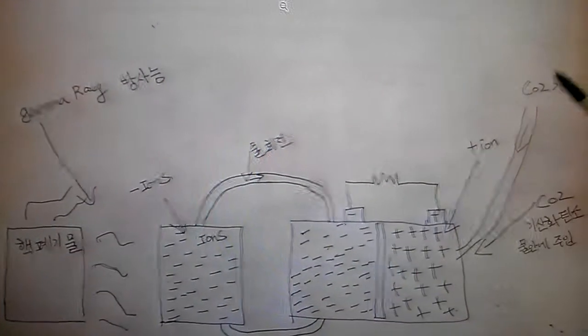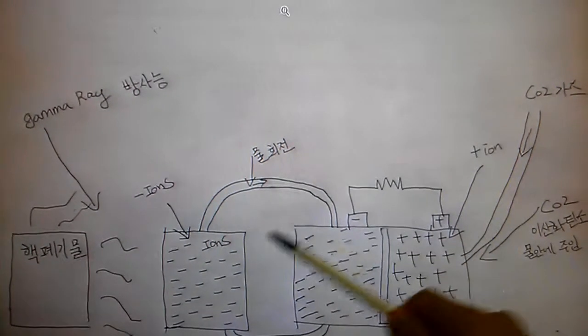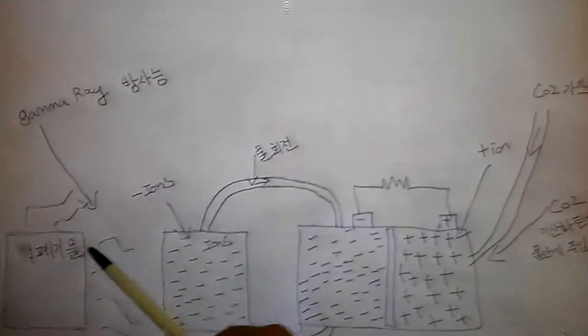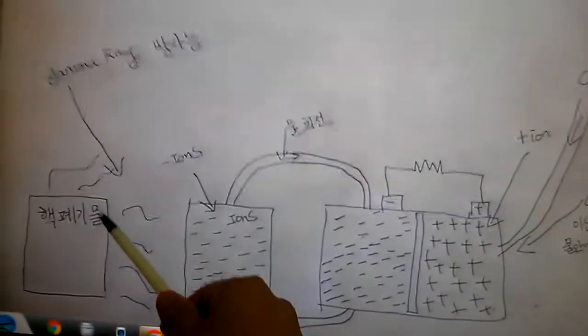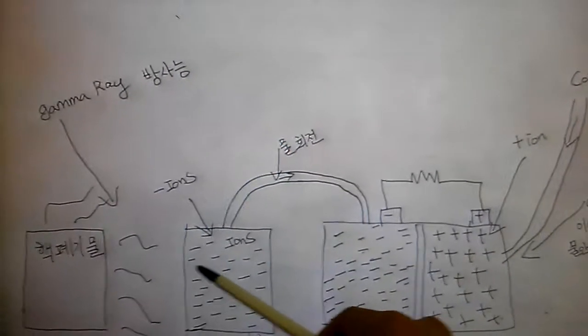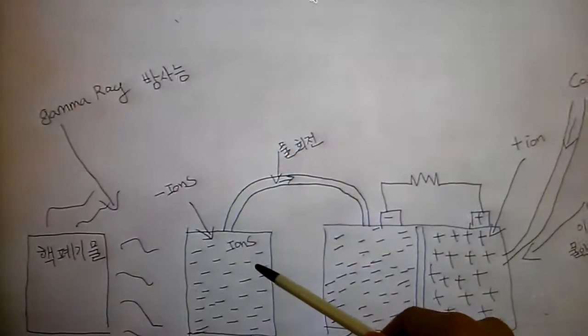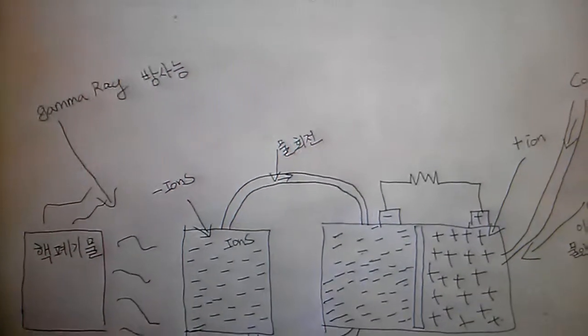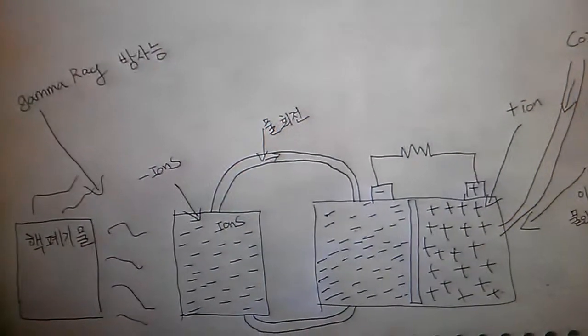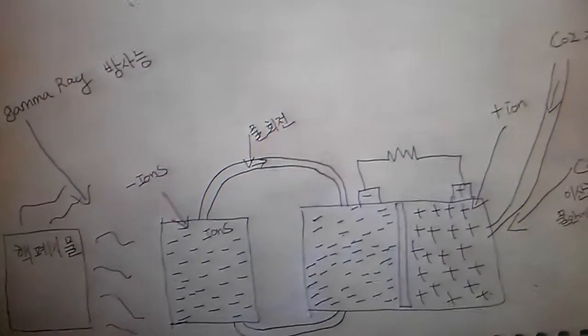I'm going to show you how this works. This is a nuclear waste and it produces a gamma ray. Once the gamma ray hits the water, it converts into another structure called negative ions. The water turns into negative ions.